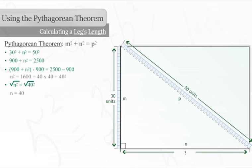The leg of the right triangle, which is also the side of the rectangle, is forty units long.